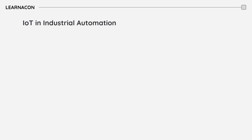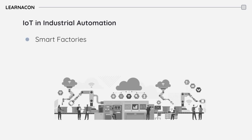IoT is transforming how we think about industrial automation. Smart factories are becoming a reality, where machines communicate and work together seamlessly, often with minimal human intervention. By collecting massive amounts of data and applying analytics and modeling, companies are making data-driven decisions to improve efficiency, reduce costs, and enhance safety.